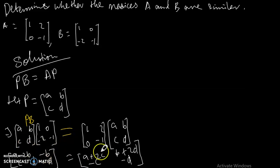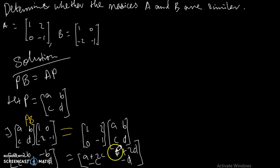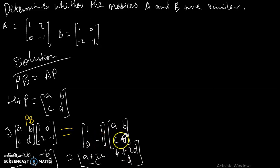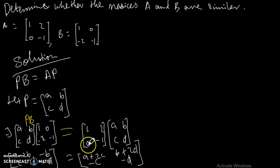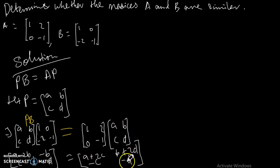In matrix multiplication, rows are multiplied by columns. So 1 times A plus 2 times C gives A + 2C; 1 times B plus 2 times D gives B + 2D; then 0 times A plus negative 1 times C gives negative C; and 0 times B plus negative 1 times D gives negative D. Now we need to solve for A, B, C, and D as a system of equations.